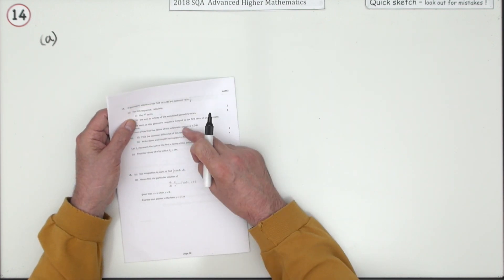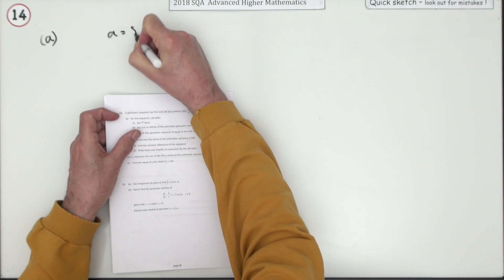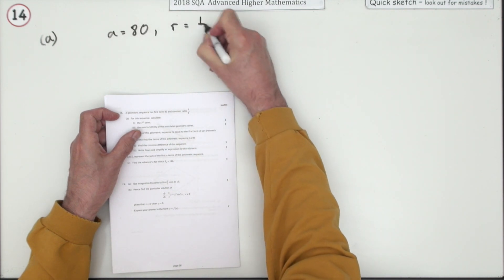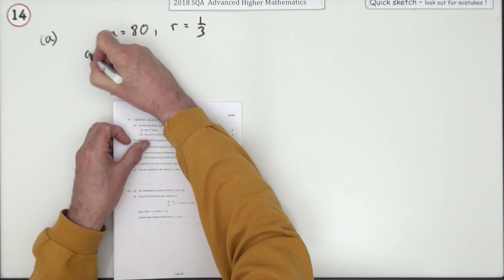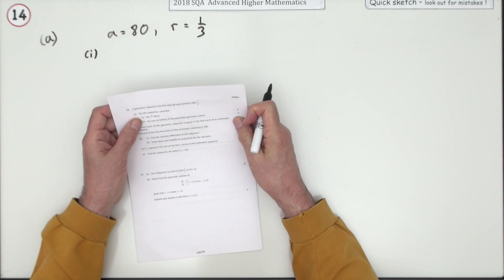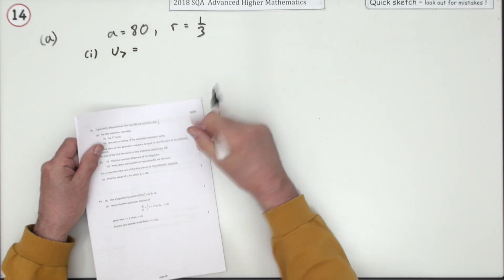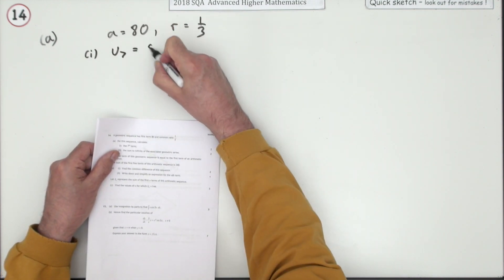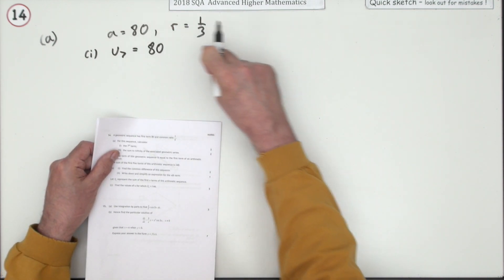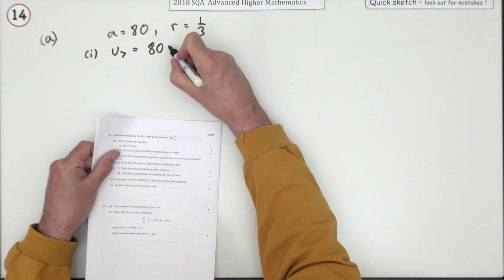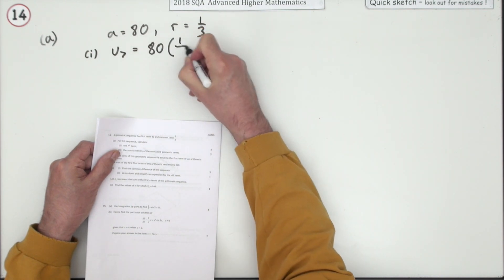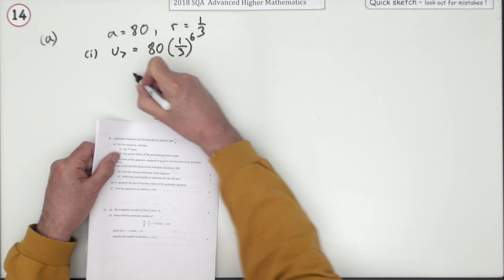A geometric sequence has a first term of 80 and a common ratio of a third. For the sequence, what's the seventh term? Well, that'll be U7 and it's two marks. Well, you start with 80 as the first term, then each successive term is formed by multiplying by a third. So by the time you get to the seventh term, you'll multiply by a third six times.